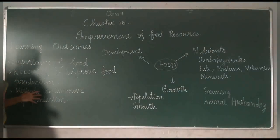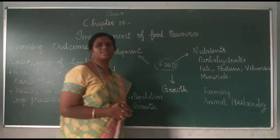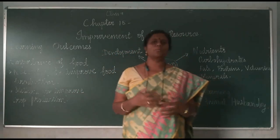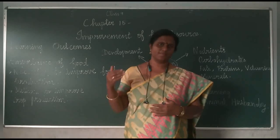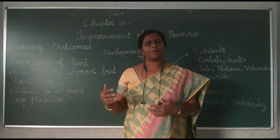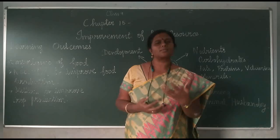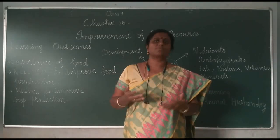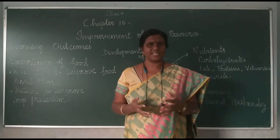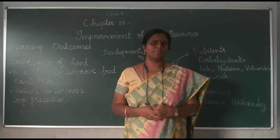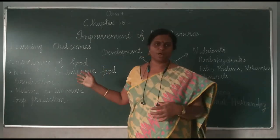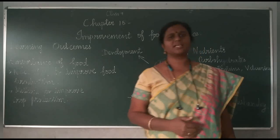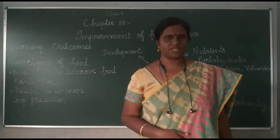The next topic we are going to deal with is methods to improve crop production. Our population is keep on growing, and for the growing population, food is necessary — food is utmost important. As population growth happens, the production of food also should increase to meet the demands of the people. Scientists have thought of different methods to improve this crop production.